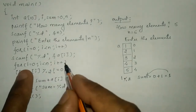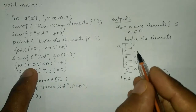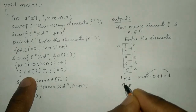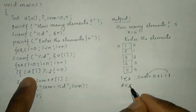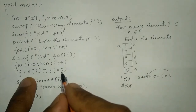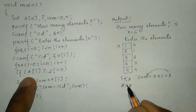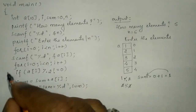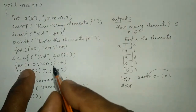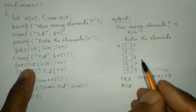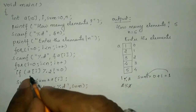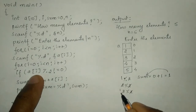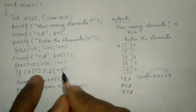Control transfers back to the for loop incrementing i by 1, now i is 1. a of 1 contains 2; 2 modulo 2 gives remainder 0, which is not not-equal to 0, so the condition fails and the sum statement is not executed. Control transfers back incrementing i by 1, now i is 2. a of 2 contains 3; 3 modulo 2 gives remainder 1, which is not equal to 0.